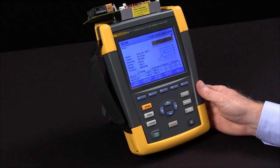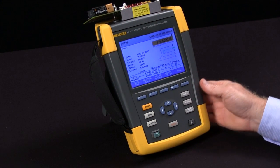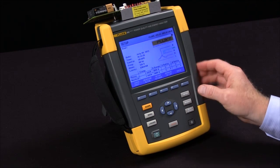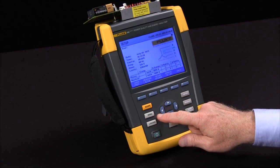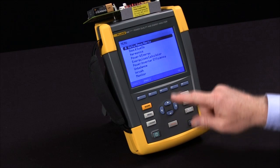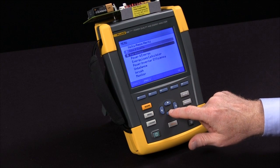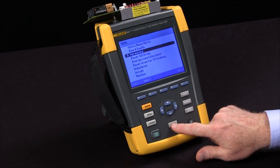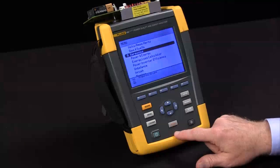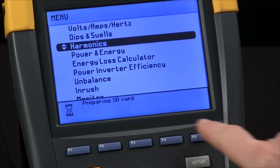In this video we're going to cover how to use the harmonics test on the Fluke 435. We start by activating our menu and then selecting harmonics with the arrow keys. Confirm that by hitting the enter button and we prepare the SD card for the test.